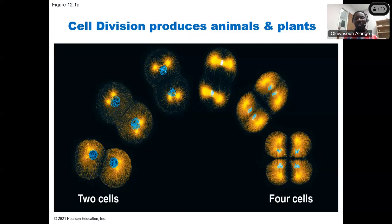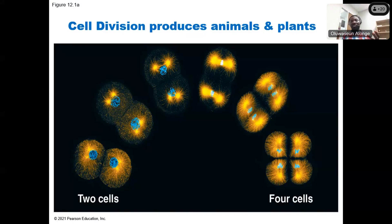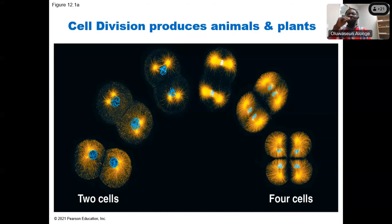What actually happens in mitosis? When there's fertilization — when the sperm fertilizes the egg — a zygote is going to be formed. The zygote that is formed is a diploid cell. That cell will then continue to undergo mitotic division before a child will be born.